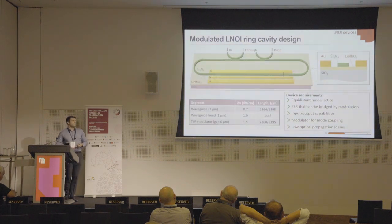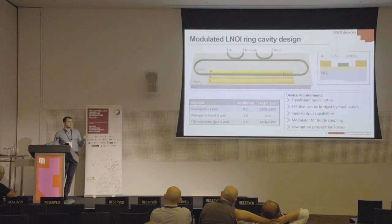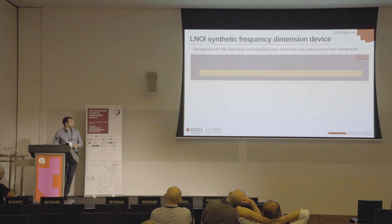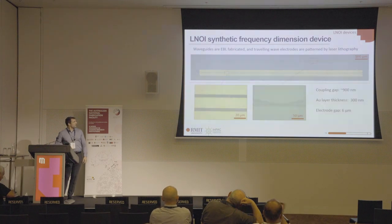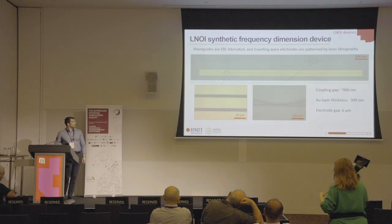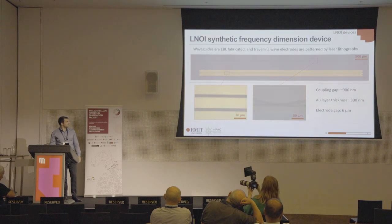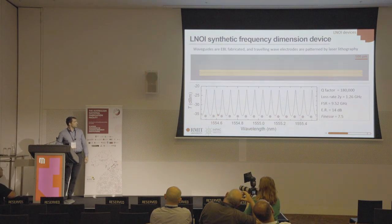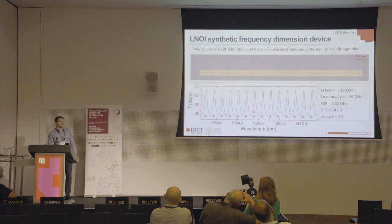The device concept is a fairly long ring resonator. The length is chosen so that we can modulate at a frequency matching the optical round-trip duration, with a high-speed broadband electro-optical modulator in lithium niobate. The ring has about a 10 millimeter round-trip length — not 10 meters, but longer than the 5 millimeters of our silicon device. We get an equidistant mode lattice, and those modes are spaced in frequency around 10 GHz, which we can bridge with modulation.